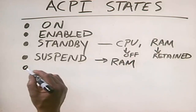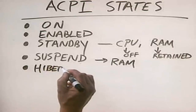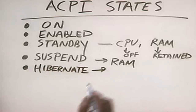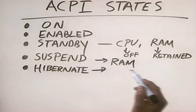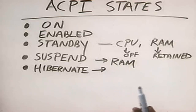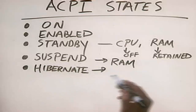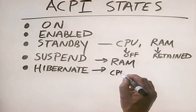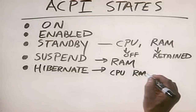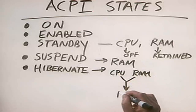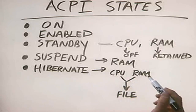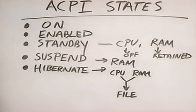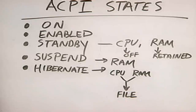The last ACPI state is called Hibernate, and it's really cool. In hibernate, we shut off everything in the PC, similar to suspend. However, we shut off RAM as well. To retain the contents, before the system is shut off, the contents of the CPU registers as well as the contents of RAM are both written out to a file on the hard disk drive. The system is then shut off. When the system starts back up, the file is read, the appropriate information is loaded back into the CPU registers, and the RAM contents are also read back in. So even though the system was completely off, it is as though it wasn't — you're right back where you started from.